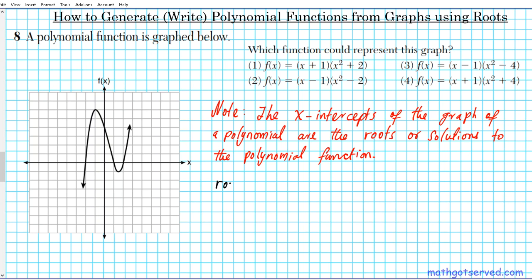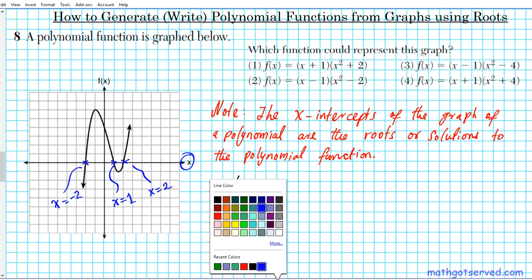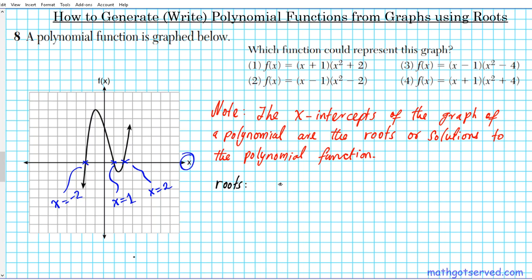First, we need to find the roots — the x-intercepts. Wherever the graph cuts the x-axis is an x-intercept. We have intercepts here, here, and here. This value is negative 2, this one is 1, and this one is 2. So we have three roots or solutions to this polynomial function.